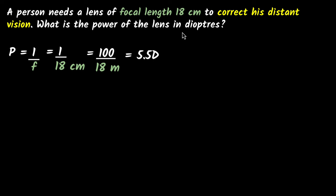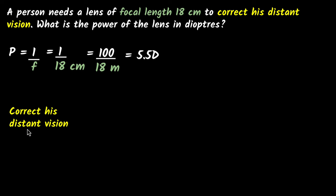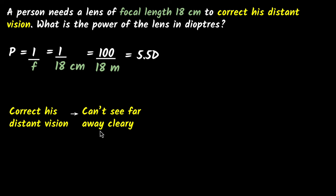Another thing we need to think about is whether this should be a converging lens or a diverging lens. Looking at the problem, it says we have to correct his distant vision — meaning he can't see far away clearly. If you can't see things far away but you can see things nearby, that is nearsightedness. So we know this condition is nearsightedness.